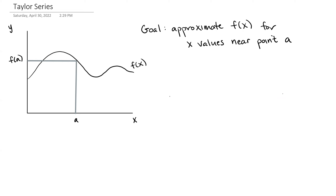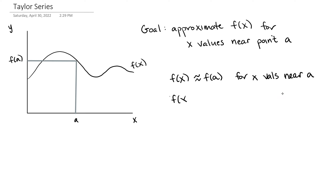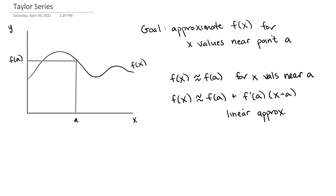To begin, we have this goal to approximate a function f of x for x values near some point A. So here's our point A, and we want to approximate the value of the function evaluated near A. If we want to be very rough about things, then we could say that f of x is going to be approximately f of A for x values near A. To make it a little less simple, we could say that f of x is approximately f of A plus f prime evaluated at A times x minus A. So this would be a linear approximation, and again this would be for x values near A.